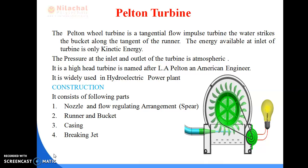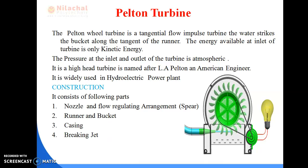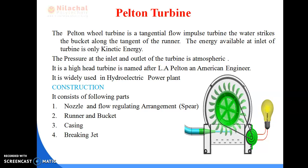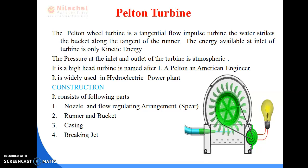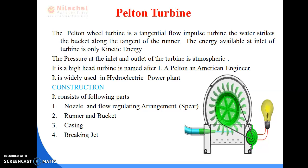In the earlier video class, we studied that a Pelton Wheel Turbine is a tangential flow impulse turbine in which the water strikes the bucket along the tangent to the runner. The energy available at the inlet of the turbine is kinetic energy. The pressure of water at the inlet and outlet of the turbine is atmospheric pressure. It is a high head turbine, named after L.A. Pelton, who was an American engineer, and it is widely used in hydroelectric power plants.